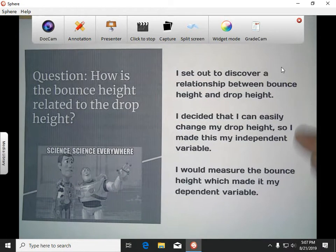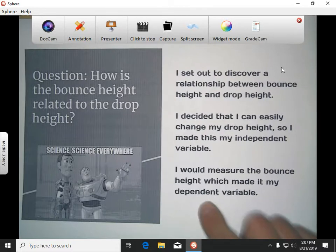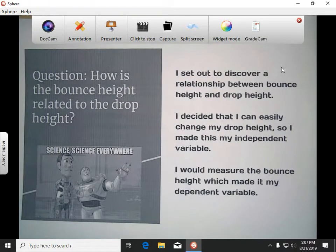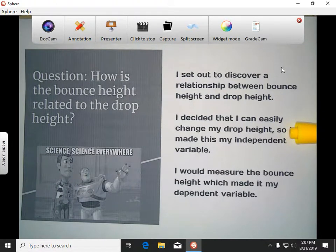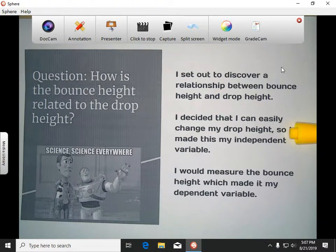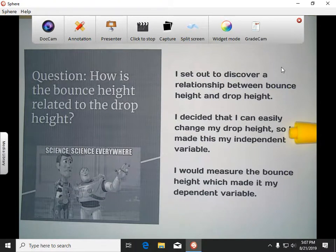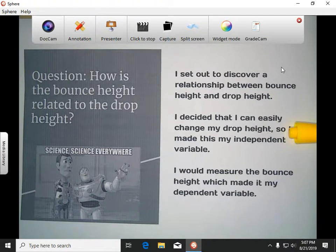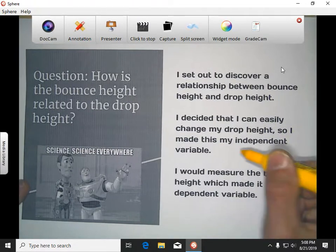I also talked about a couple things here about the idea of an independent variable and a dependent variable. I decided that I can easily change my drop height, so I made this my independent variable. The independent variable is the thing in the experiment that you change on purpose. So for all of us in this lab, the independent variable was basically how high you started when you let go of the ball.